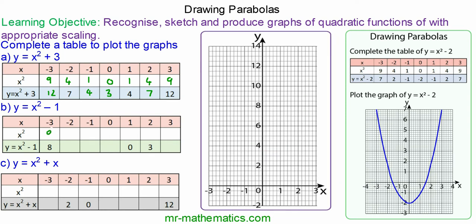Moving on to question b. Again we can create our table of results. 0 squared minus 1 is negative 1. 1 squared minus 1 is 0. And 3 squared minus 1 is 8.